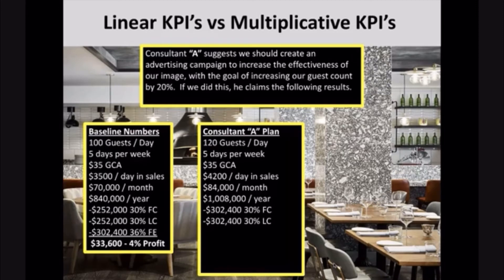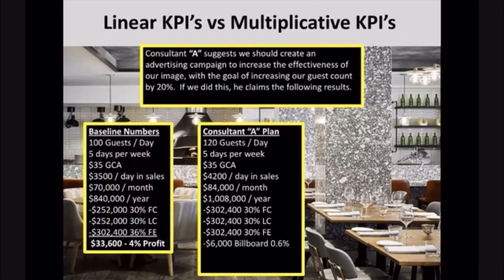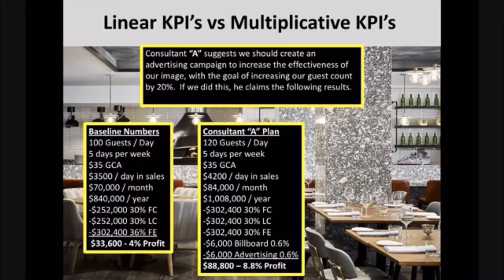Labor costs — they're not going to overwork the staff with extra people coming in. They'll put on staff where needed but stay at 30%, so $302,000 allocated to that. Where they make their money is fixed expenses didn't change. Fixed expenses now only take up 30% of the bigger revenue pool, so they make extra profit. To do this campaign, a billboard on the highway at $500 a month requires a one-year contract — $6,000 — plus Instagram, Facebook, and local paper ads at another $500 a month. In the end, you're now going to make $88,800 profit, which is 8.8%.